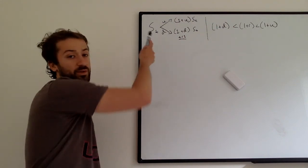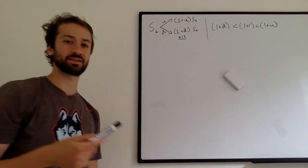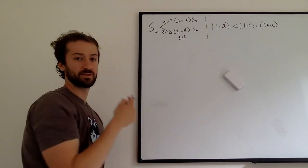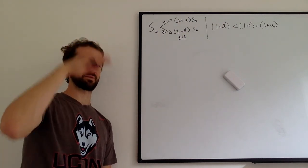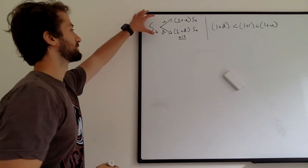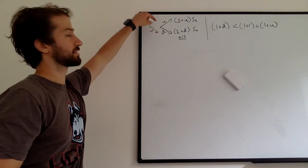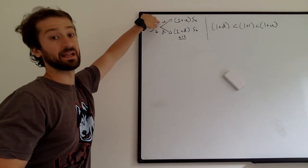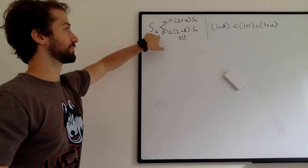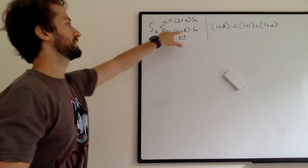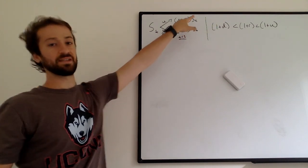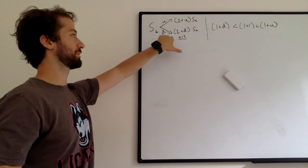So again, we said we have the stock price S sub T. S is the stock. S sub T is the price of the stock at time T. It goes up and down throughout time. And specifically, we're saying that we have the stock that either goes up, it has a U move, or it has a D move from time T to time T plus one. So at time T plus one, it's going to be S sub T either times one plus U or times one plus D.